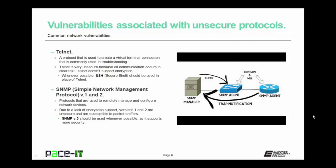Then there is SNMP — Simple Network Management Protocol — Versions 1 and 2. SNMP is a protocol used to remotely manage and configure network devices. Due to their lack of encryption support, Versions 1 and 2 are unsecure and susceptible to packet sniffers. This can allow an attacker to grab those packets and actually gain control of the configuration and management of your network devices. If you're going to use SNMP, Version 3 should always be used as it supports more security, including encryption.